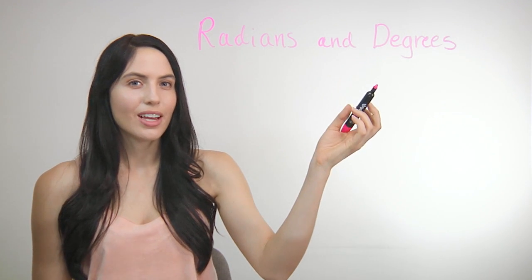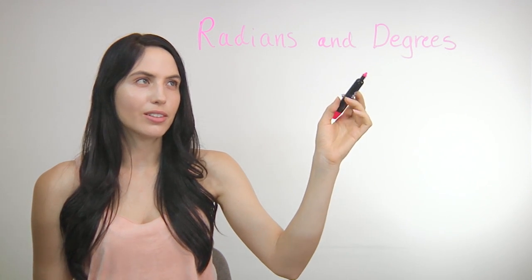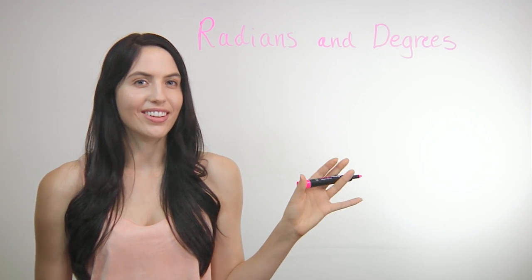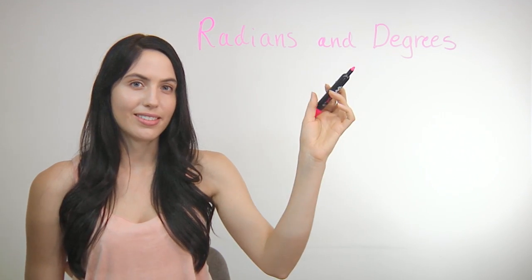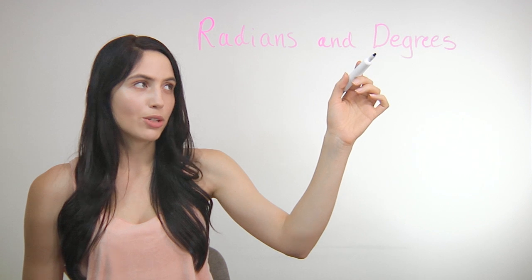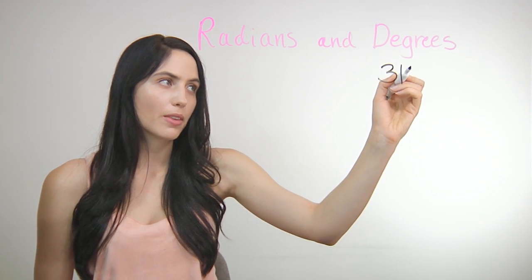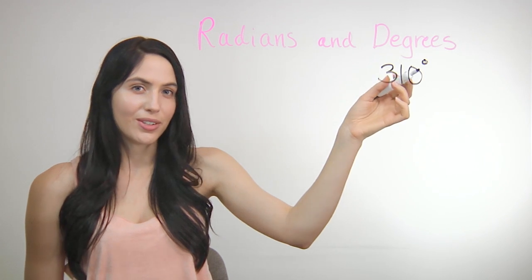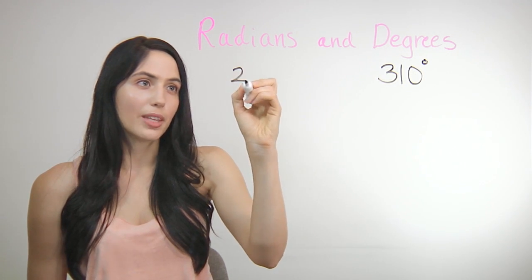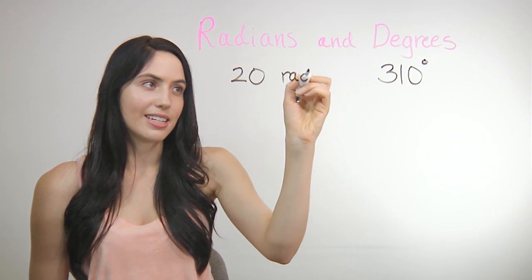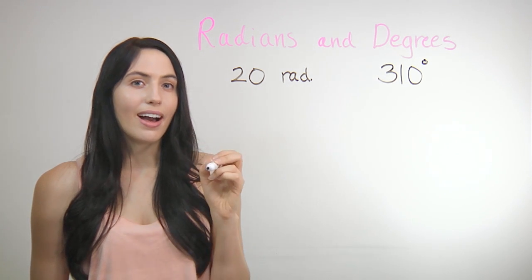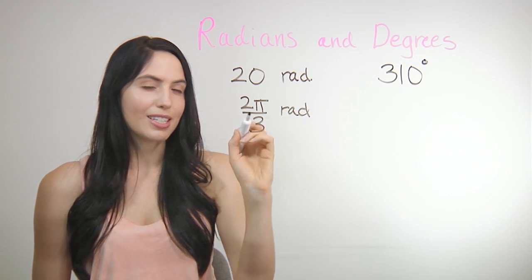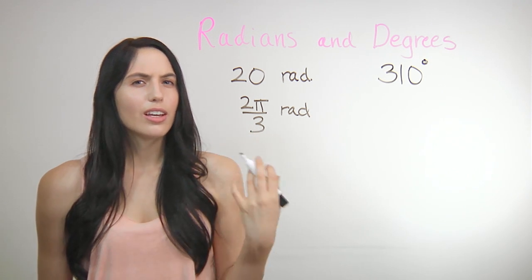So what are radians and degrees? They're just different ways of measuring an angle — different units for saying how big an angle is. You'll need to know both radians and degrees. A degree angle measure will be some number with a little degree symbol up in the corner. A radian angle measure will not have a degree symbol — it could be just a number, like 20 radians (RAD is the abbreviation), or more likely it has a pi in it, like 2π over 3 radians. That's usually how you'll know it's a radian angle measure.